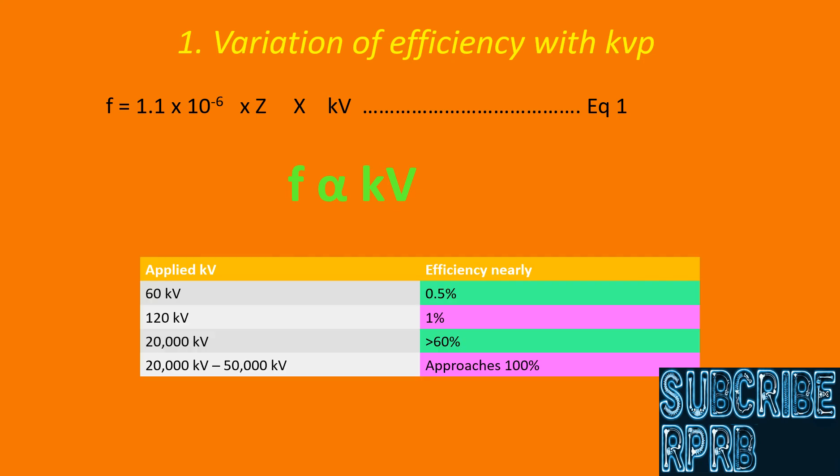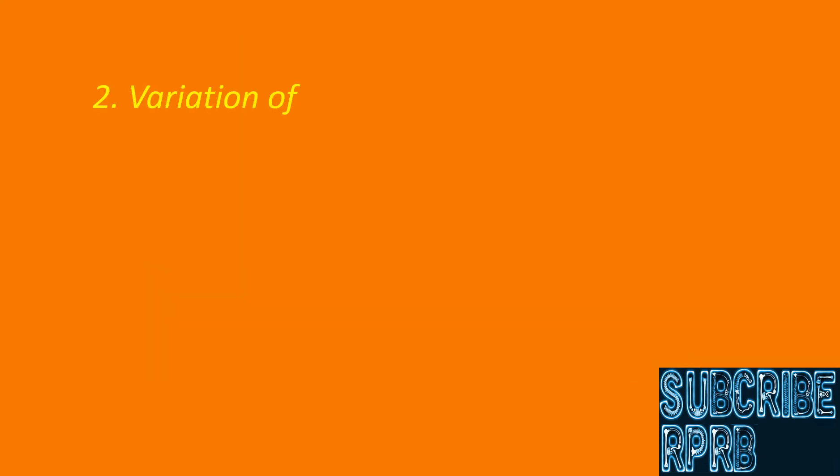At 60 kV, efficiency is nearly 0.5%. At 120 kV, efficiency is nearly 1%. At 20,000 kV or more, efficiency will be more than 50%. In the range of 20,000 kV to 50,000 kV, the efficiency approaches 100% — way above the diagnostic kV range.